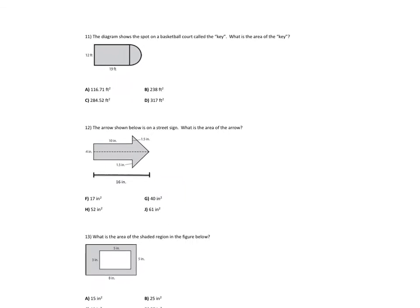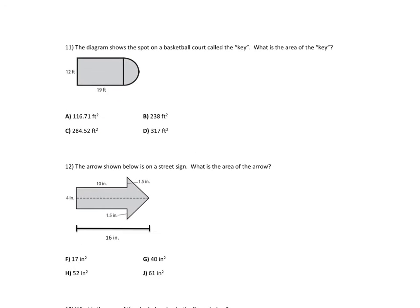Number 11. The diagram shows the spot on a basketball court called the key. What is the area of the key? It's a rectangle and a semicircle. So my rectangle is base times height. So I have area equals 12 times 19. If I multiply 19 and 12, I get 228 for that. So 228 is just this piece right here.